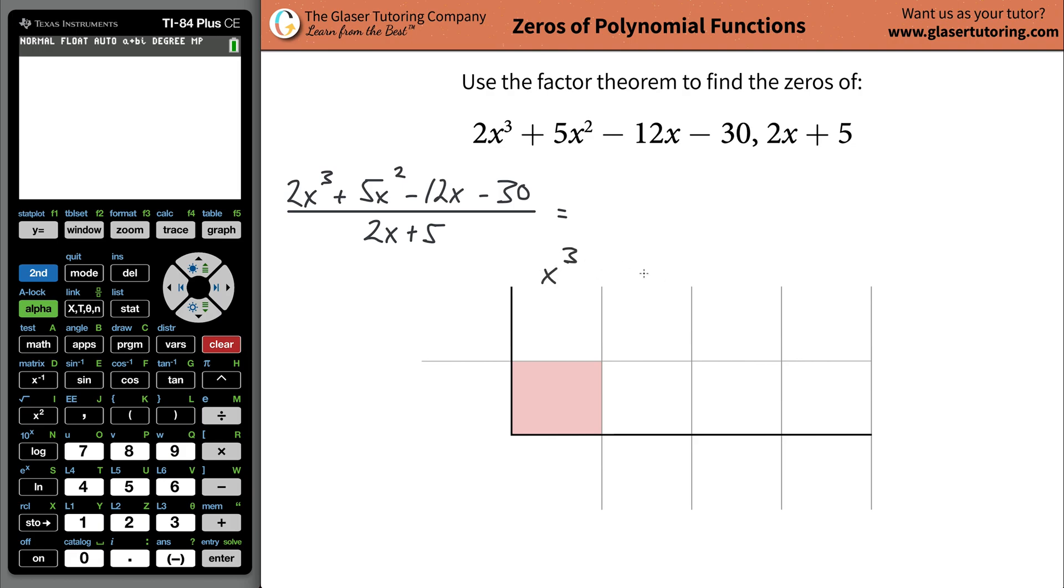So to figure out the number of columns you need in your synthetic division table, what you need to do is locate the highest power of x in your numerator function, add one to it for a total of four. And that'll tell you the number of columns. So inside the first goes the coefficient of your x cubed, coefficient of x squared, coefficient of x, and then your constant. So the coefficient of the x cubed is going to be a two. Coefficient of the x squared is a five. Coefficient of the x term is a negative 12. And then the coefficient of the constant term is a negative 30.